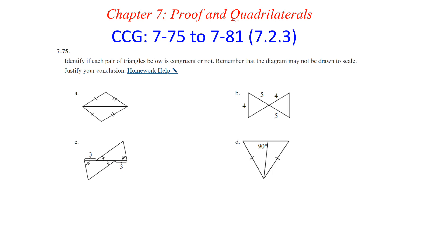On part A, trying to prove or justify that the triangles are congruent. You can see that this side length is congruent to this side length. We also have two tick marks here, so those two are congruent. The other one to recognize is the side they share in common, so they are congruent by side-side-side congruency.